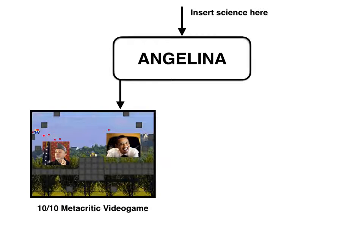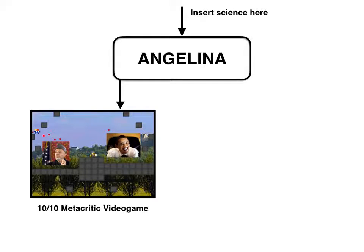But for a lot of game generation projects, you might just stop here. You might just say that this system produces games, and that's fine, and that's what it does. And if you were building this for the games industry, if you were writing a grant and trying to explain the system, that would be enough. You build a system and it makes games, and those games are either good or bad, and the proof is whether they're good or not — that's your evaluation for the paper.